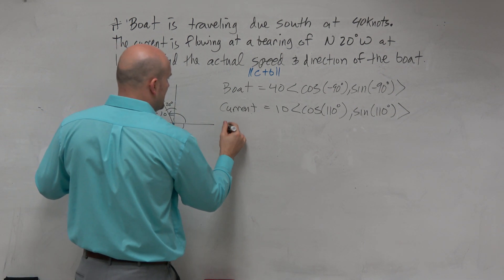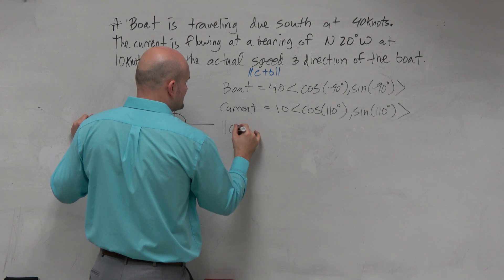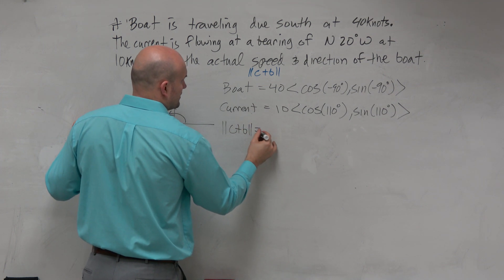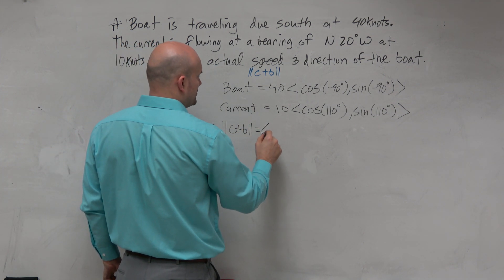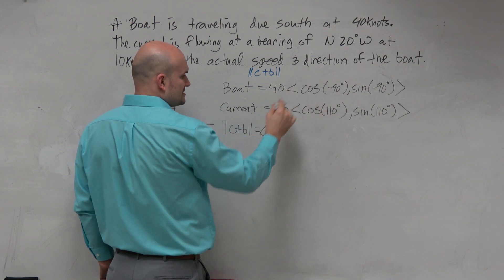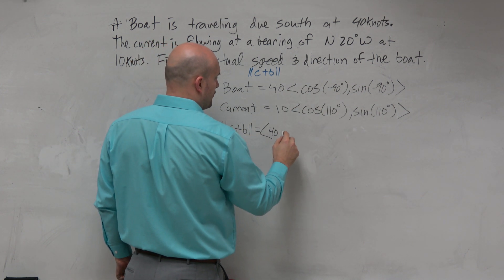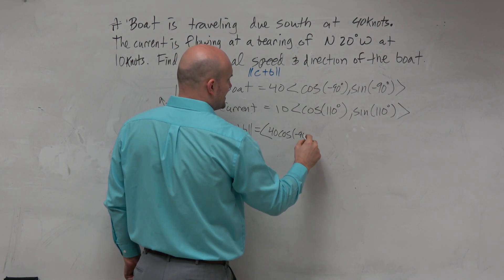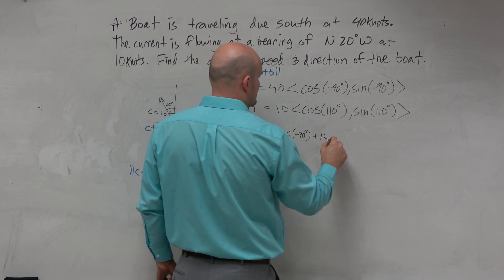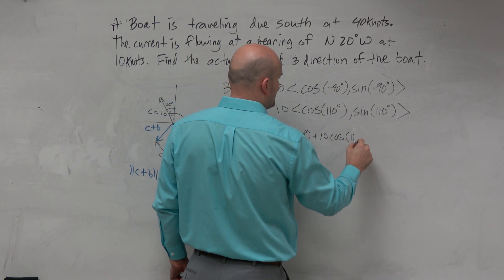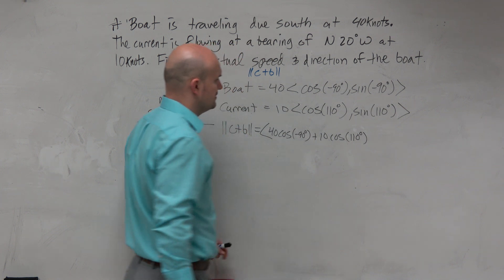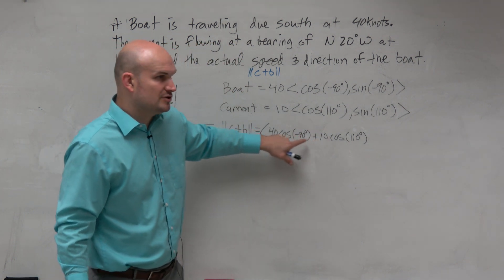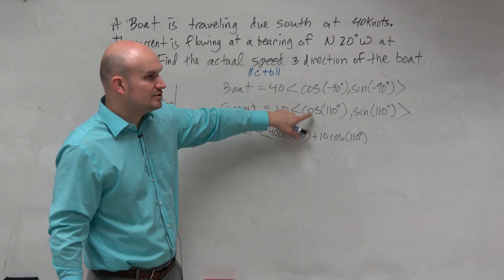So, to find the magnitude of C plus B, basically, all we're going to do is combine these components. So, you're going to do 40 cosine of negative 90 degrees plus 10 cosine of 110 degrees. Right? You're adding the first two components. You're adding these two components together.